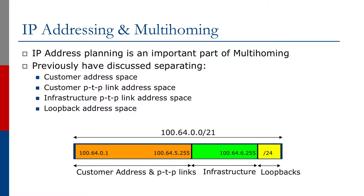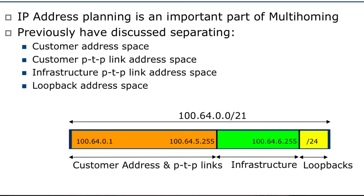These four blocks make up the service provider address plan, as you can see in the diagram, where there is an example of a /21 divided between customer address space, customer point-to-point links, the infrastructure point-to-point links, and the loopback addresses.